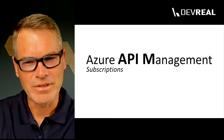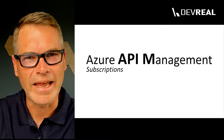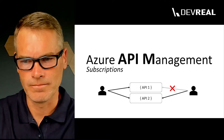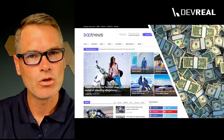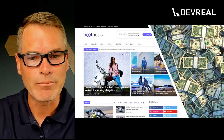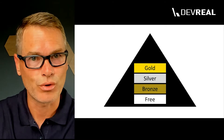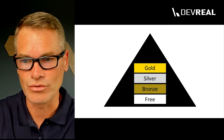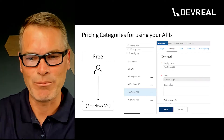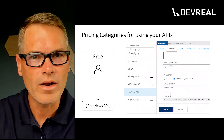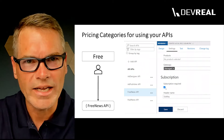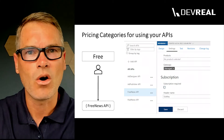Subscriptions in APM is a concept of saying what APIs can be used by whom. Maybe you host an online magazine and want to monetize your APIs by having different pricing categories. The free category contains the free news API and is accessible for all API consumers, unregistered and registered users of APM.